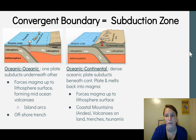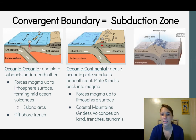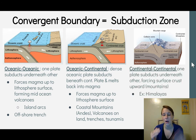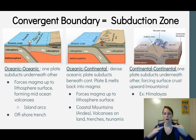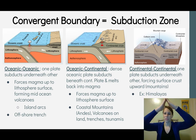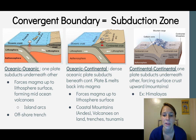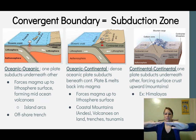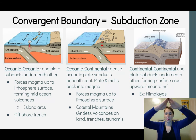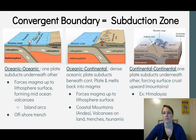The last convergent type is continental-to-continental, where one continental plate subducts under the other. This forces the crust upward, creating mountain ranges. The Himalayas are an example of this — as the crusts come together, the plate goes down but the crust pushes up, building the mountain range.